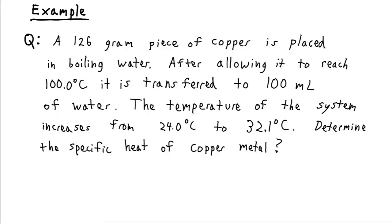Suppose we want to figure out the specific heat capacity of a substance, which is useful for any heat transfer calculation. We take a 126-gram piece of copper and put it in boiling water at 100 degrees Celsius — an easy way to ensure a regulated temperature. We let it equilibrate to 100 degrees C, then transfer it to 100 milliliters of water in a thermally insulated container. We note that the temperature of the water increases from 24 Celsius up to 32.1 Celsius.